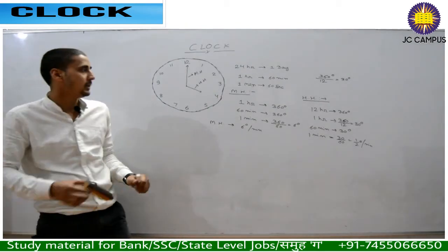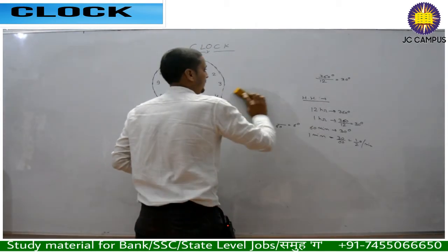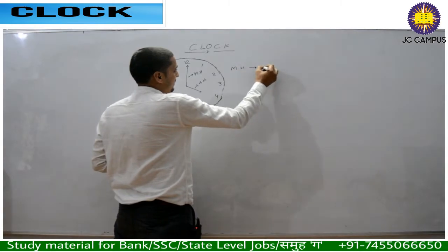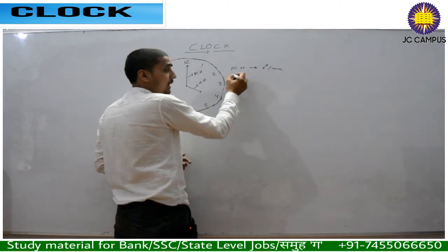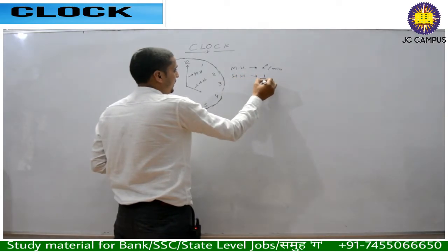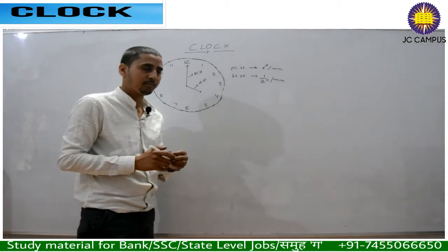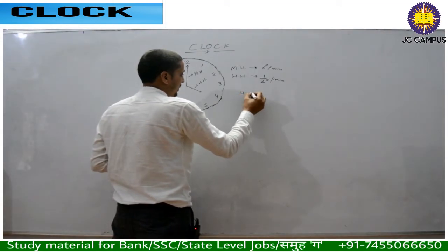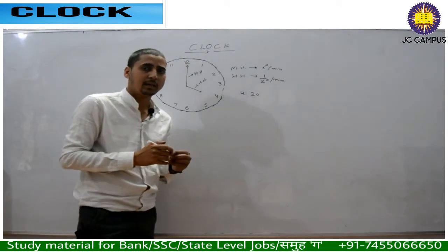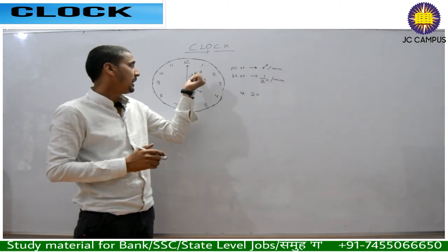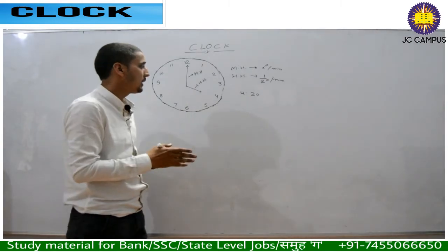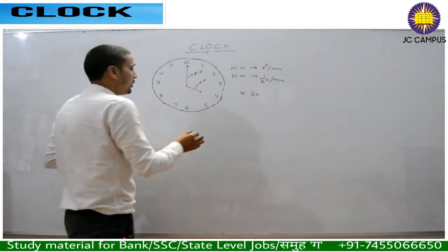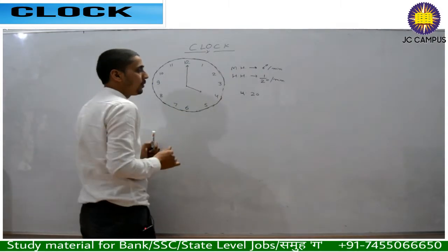Now this is how we solve the question. Minute hand speed is 6 degrees per minute and hour hand speed is 1/2 degree per minute. When we talk about the time 4:20, the question is: at 4 hours and 20 minutes, what is the angle between the minute hand and the hour hand?